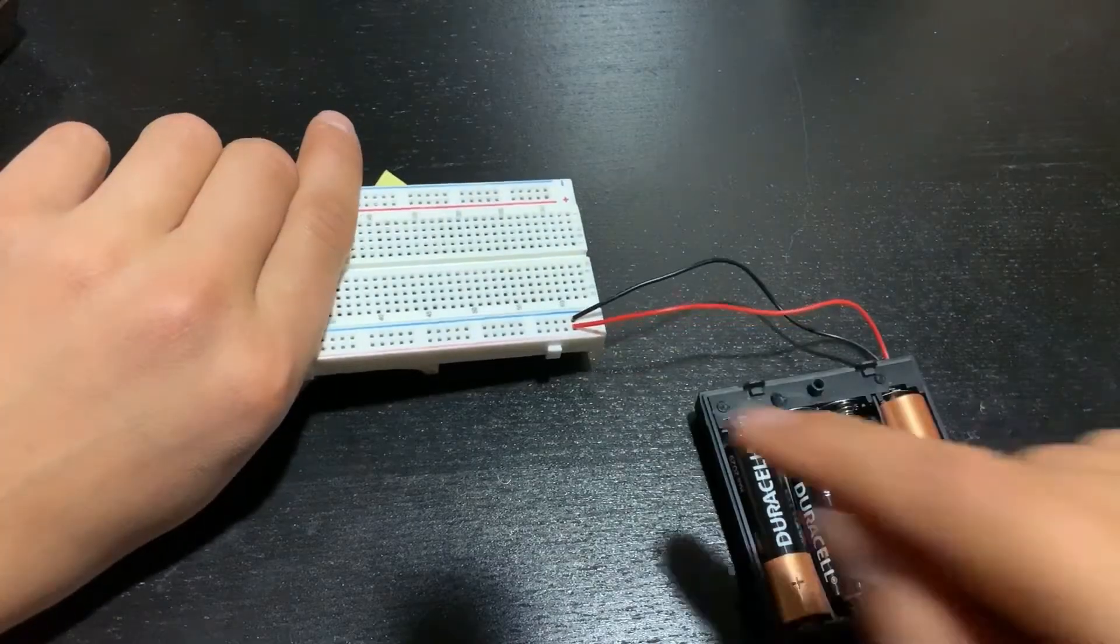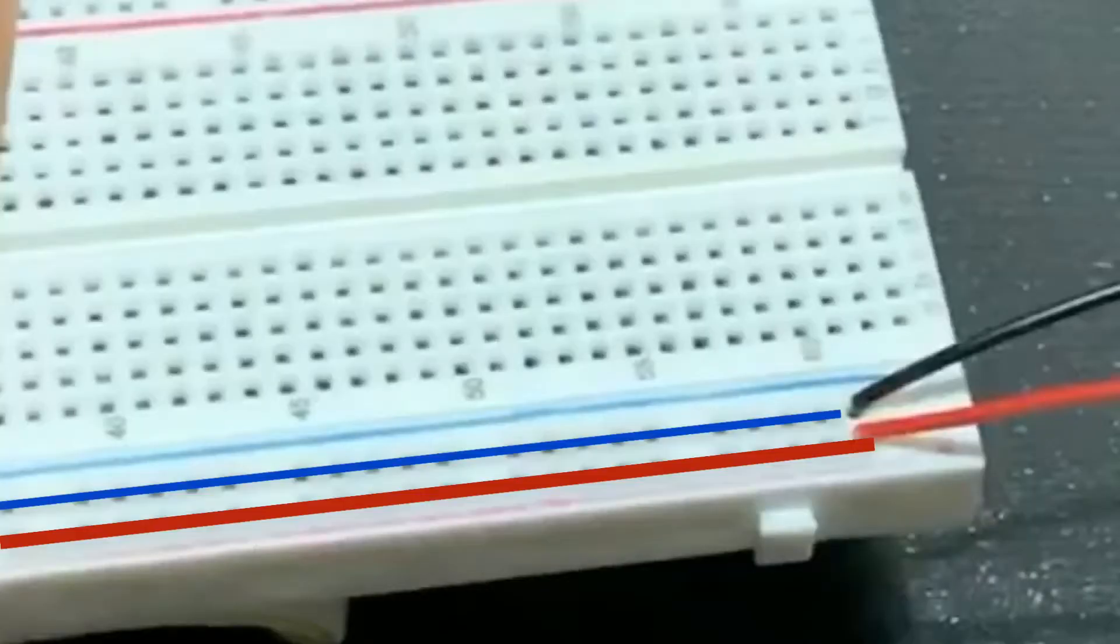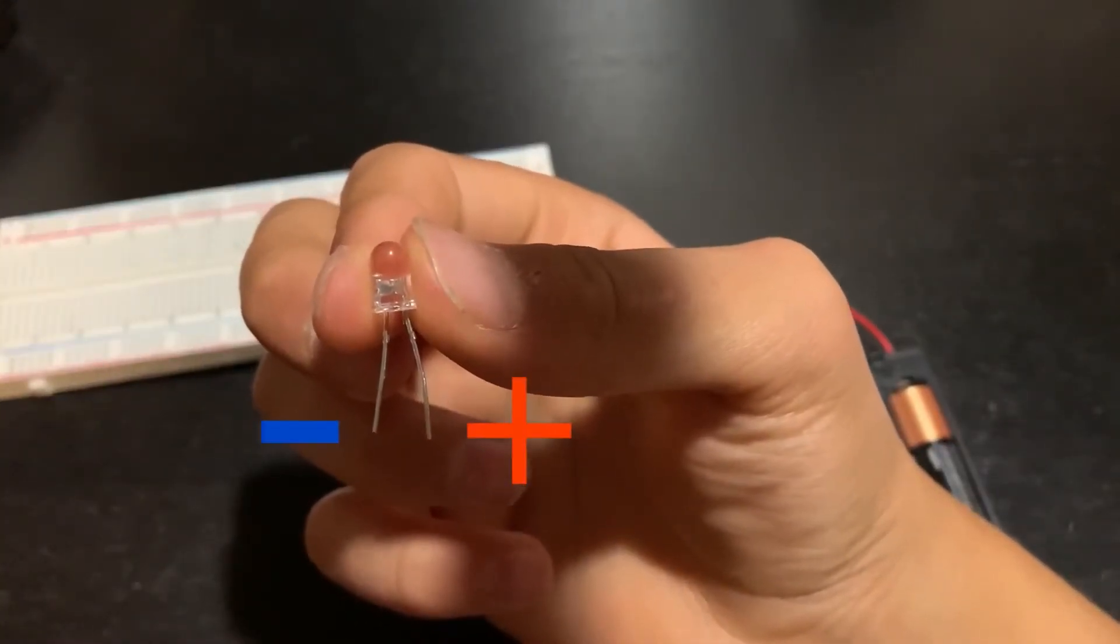And in doing so, the positive and negative rails will extend throughout the whole breadboard. As you can see, the vertical rails will extend across. Now we can add an LED. And don't forget, the longer end will always be positive.